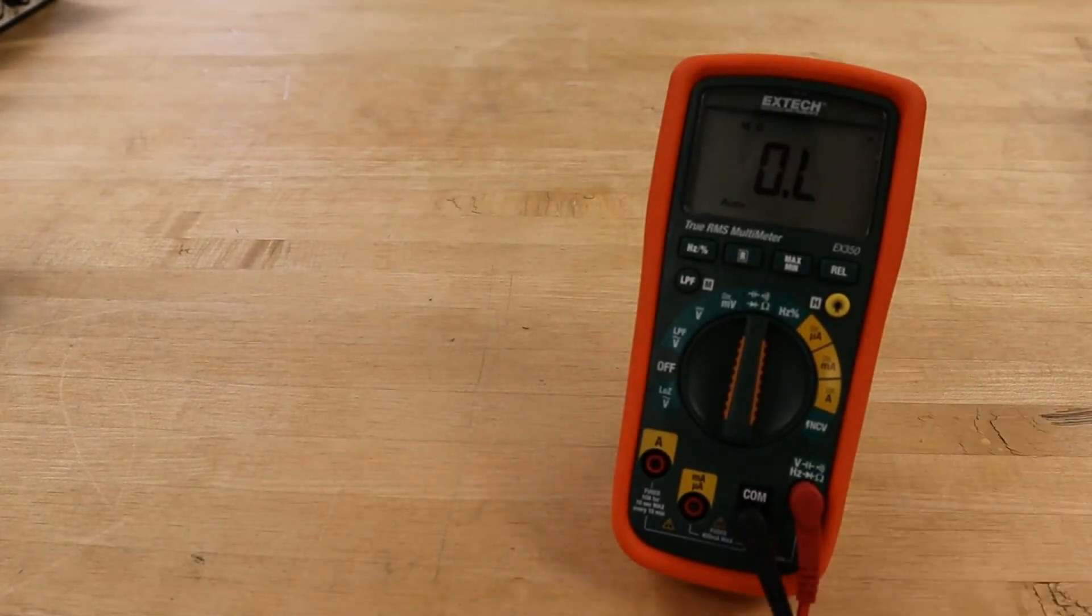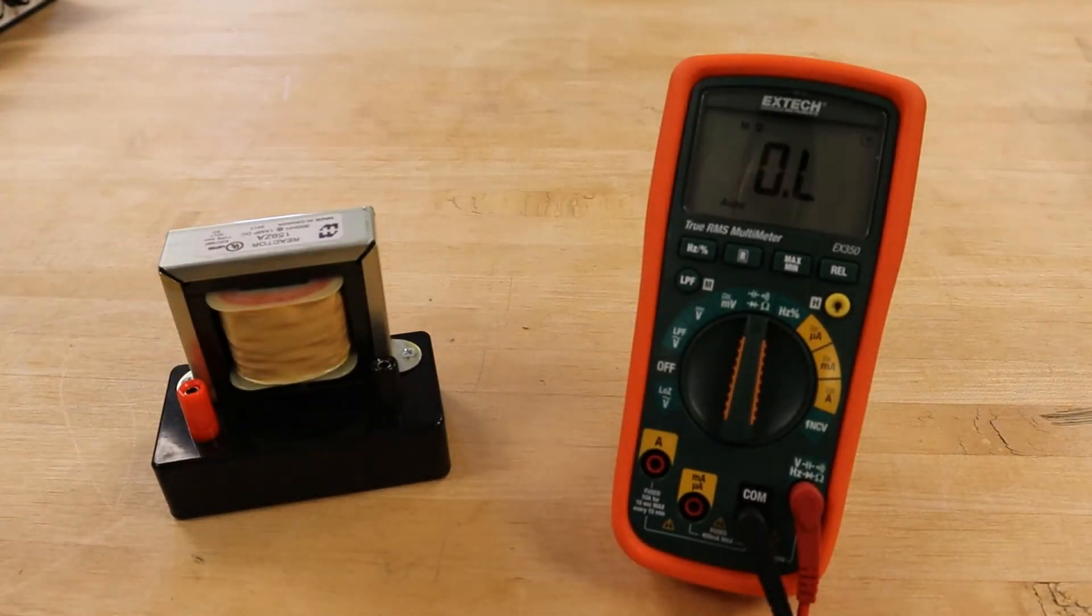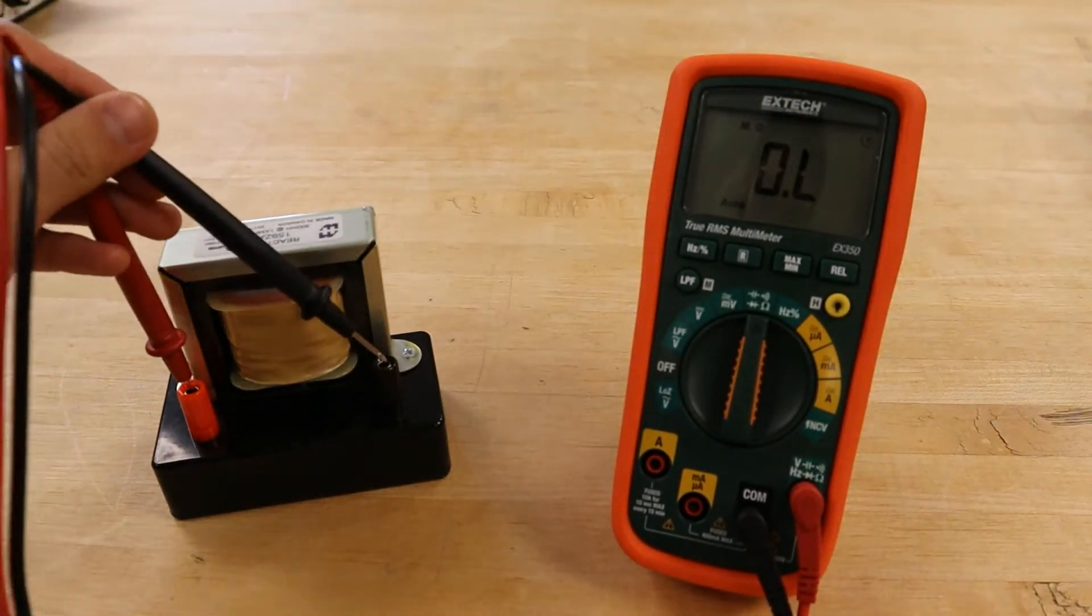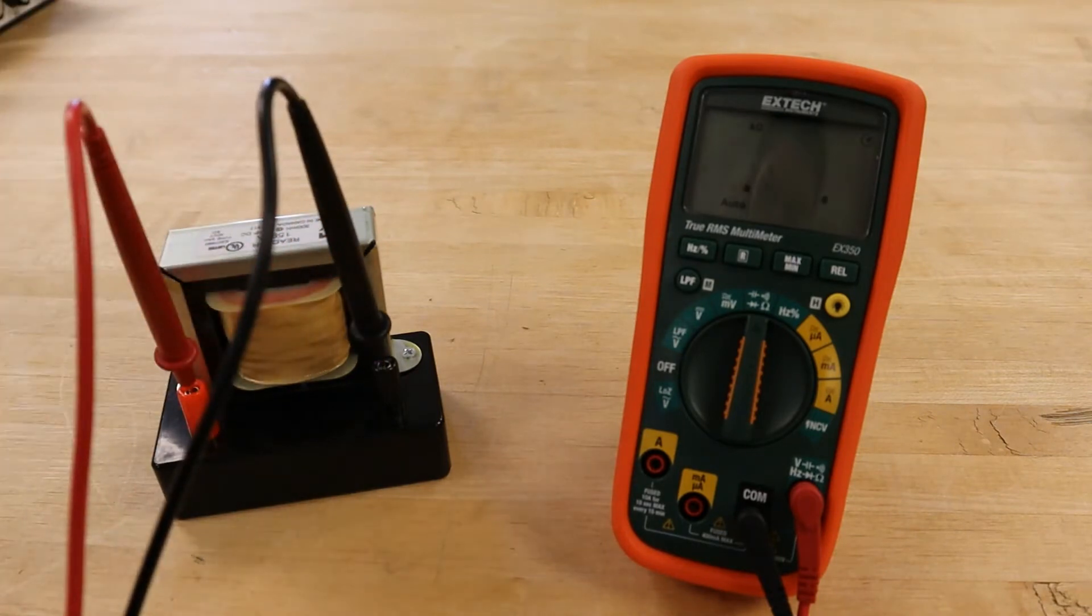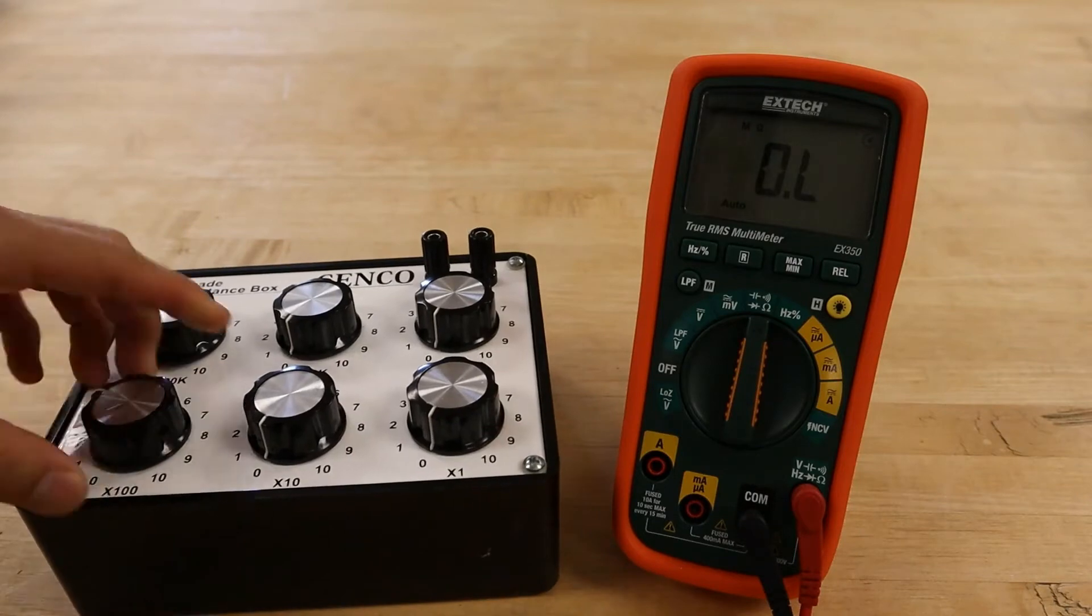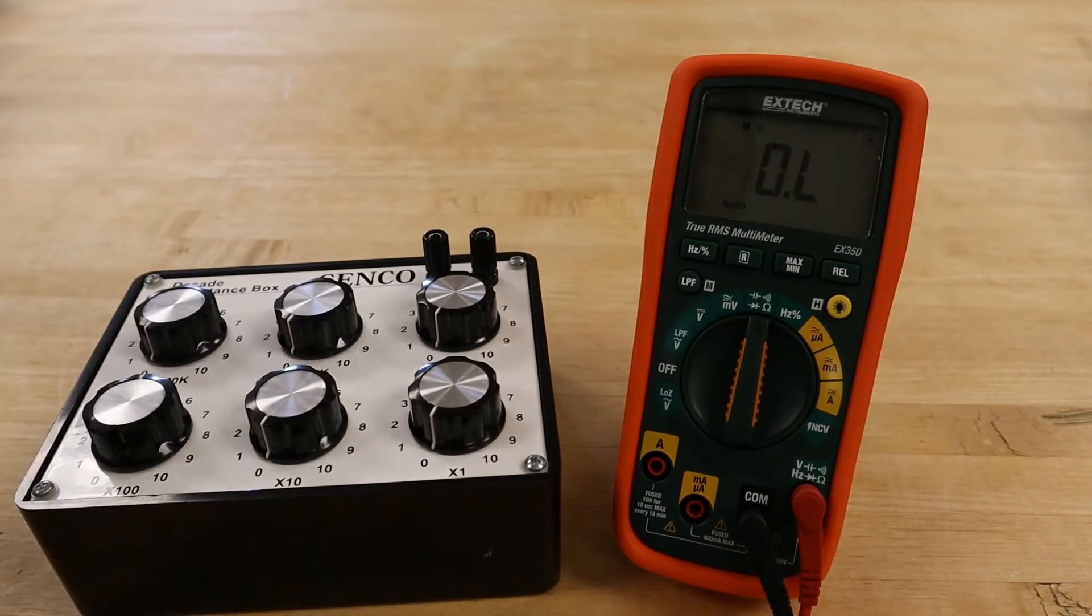To begin this experiment, we will use the DMM to measure the resistance of this inductor coil. And once we have recorded this value, we will also use the DMM to confirm that the decade resistor has been set to 500 ohms.